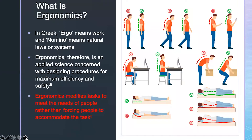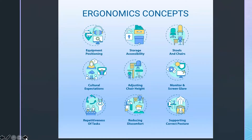First of all, I think we need to actually define what ergonomics is. In Greek, ergo means work and nomino means the natural laws or systems. So ergonomics is basically an applied science that's concerned with designing procedures for maximum efficiency and safety. Ergonomics basically modifies the tasks to meet the needs of the people instead of the other way around — something we can really apply in dentistry. This slide gives a good broad overview of the concepts regarding ergonomics, and dentistry falls into almost every single one of these categories.